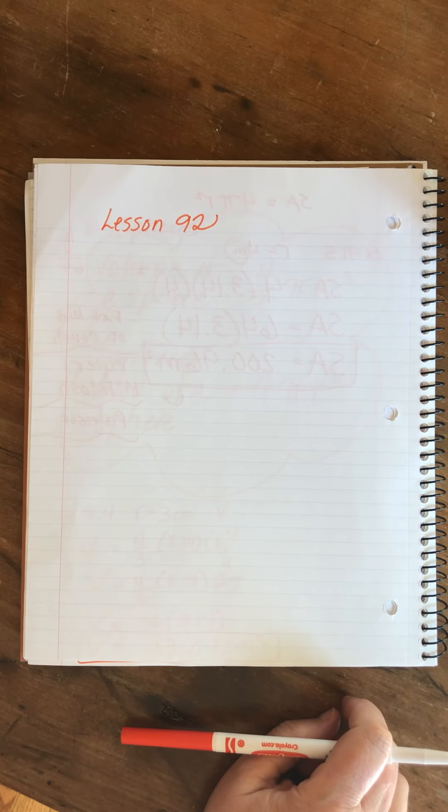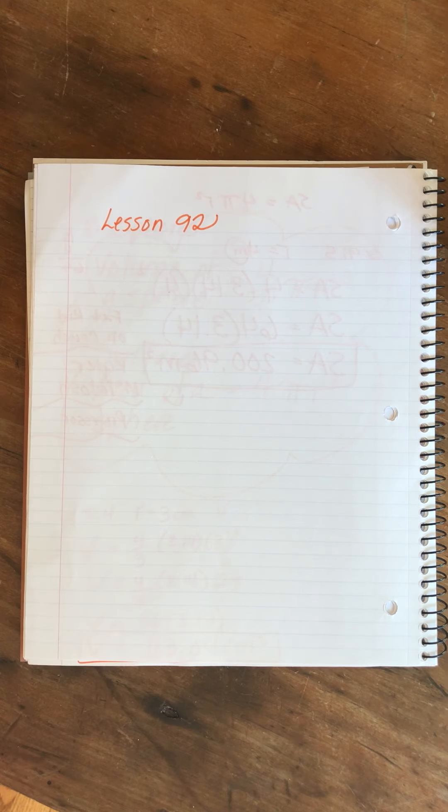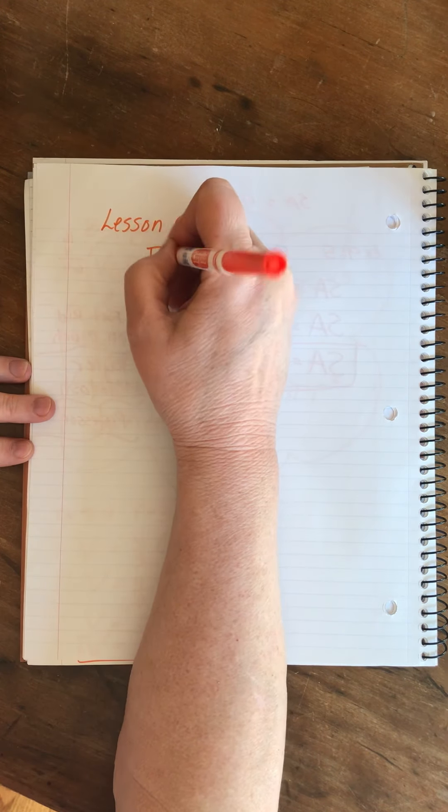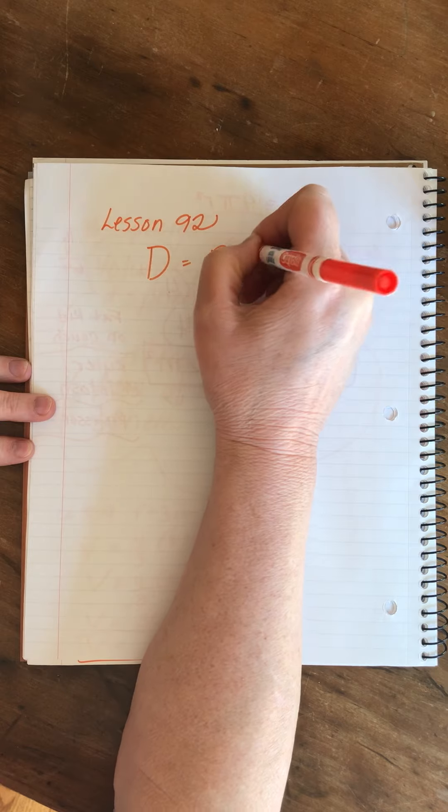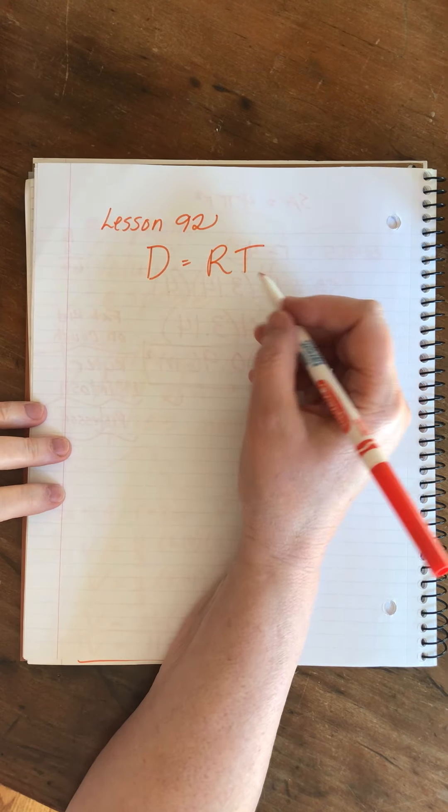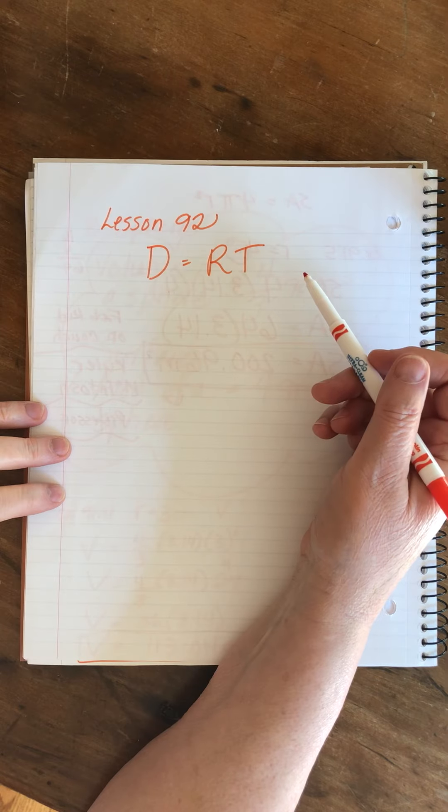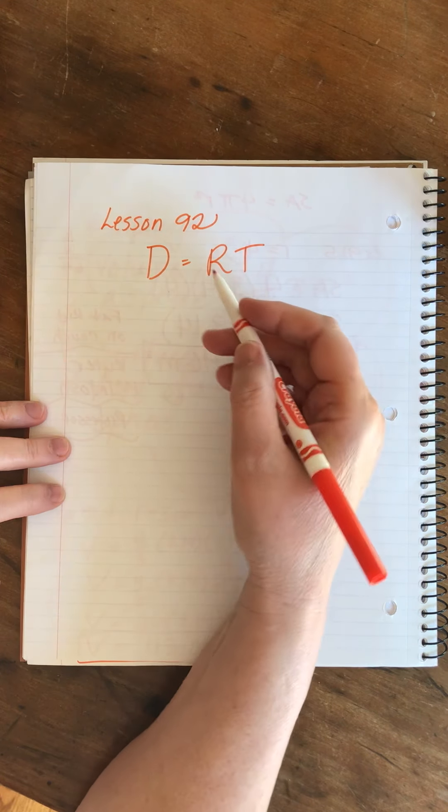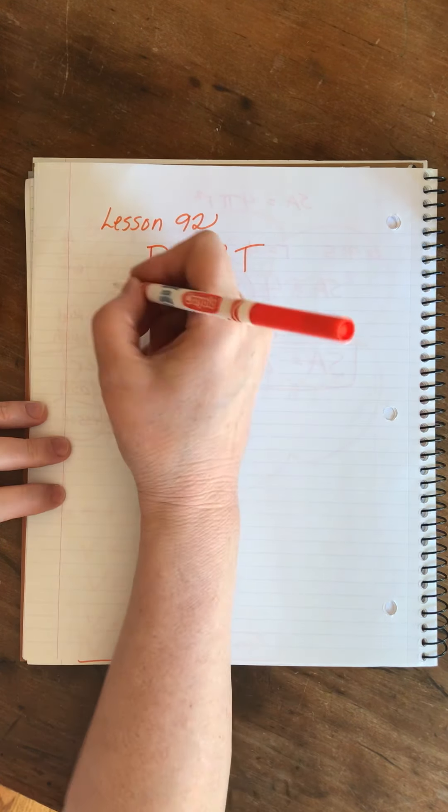That's in Algebra 1 Lesson 92. Are you ready to go on a journey with me? We are going to start a type of problem that I like to call DIRT Problems. The reason I call them DIRT Problems is they're all based on this basic equation, which is D equals RT. I suppose I could call them DRT Problems, but somehow I started calling them DIRT Problems and that has just stuck.